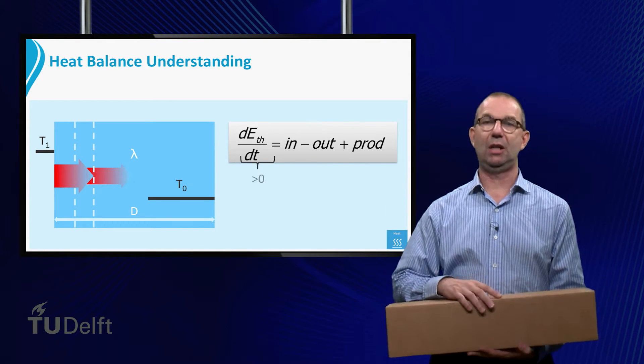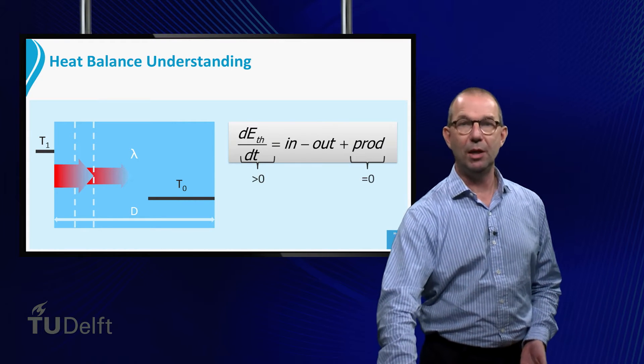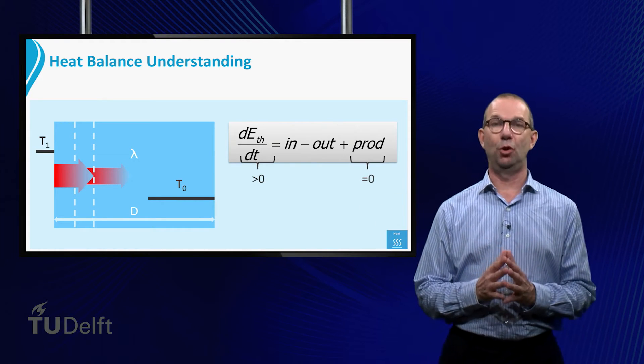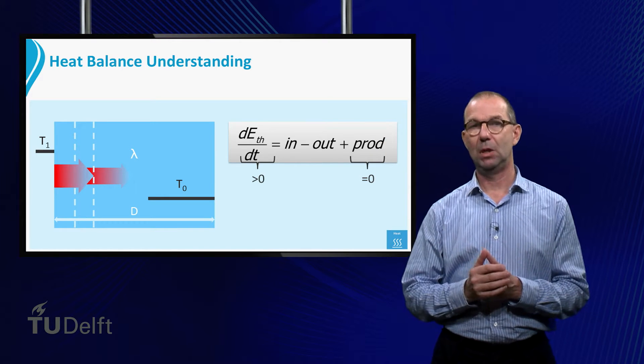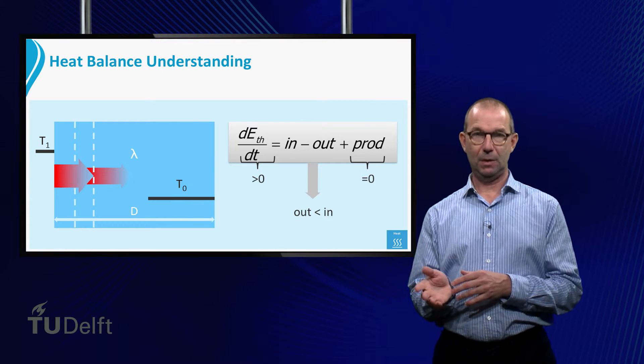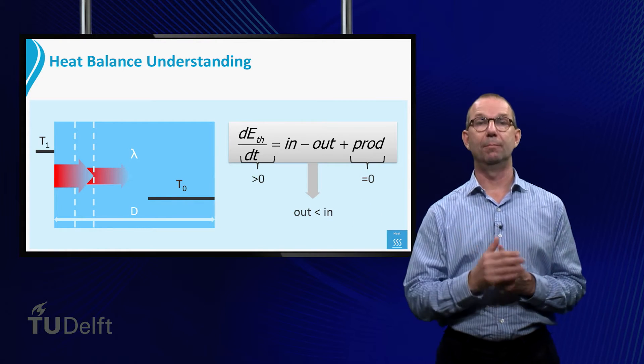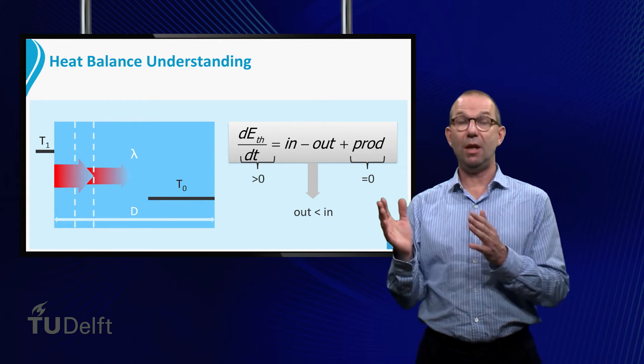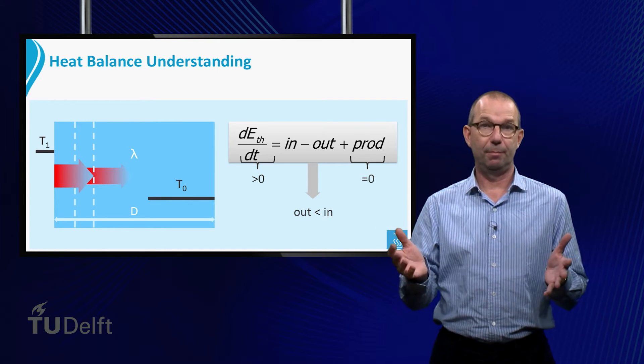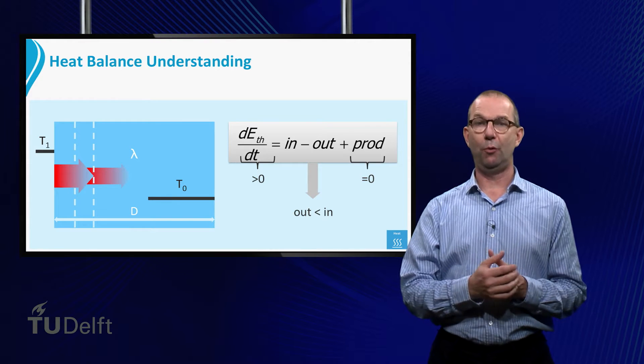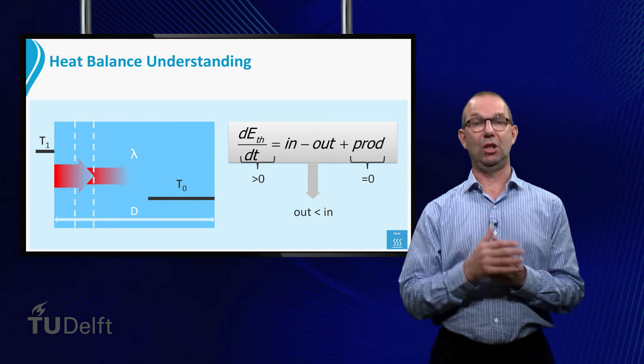This is clearly an unsteady situation. With the dE_thermal/dt larger than zero, the strip is warming up. Consequently, the heat flowing out is smaller than the heat flowing in. This also means that the further we go into the plate, the less heat is available for heating up. This causes the temperature profile to be curved as we saw in the previous sheet.